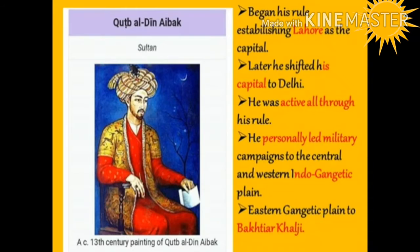Qutbuddin Aibak began his rule by establishing Lahore as the capital of his kingdom, and later shifted his capital to Delhi. He was active throughout his rule, conquering new territories and suppressing rebellions. He personally led military campaigns to the central and western Indo-Gangetic plains, i.e. North India, and left the conquest of the eastern Gangetic plains to Bakhtiyar Khalji.